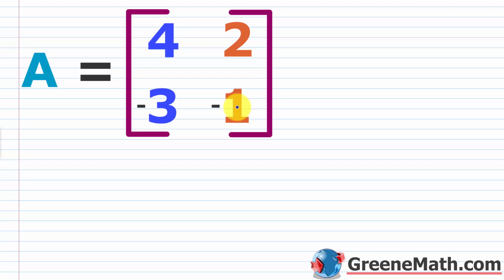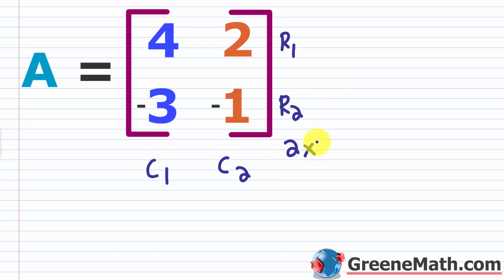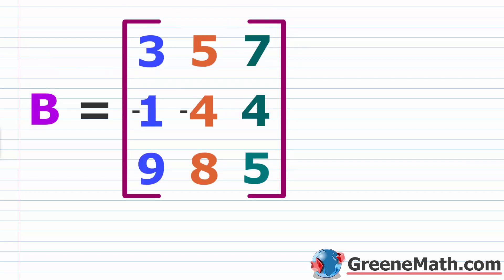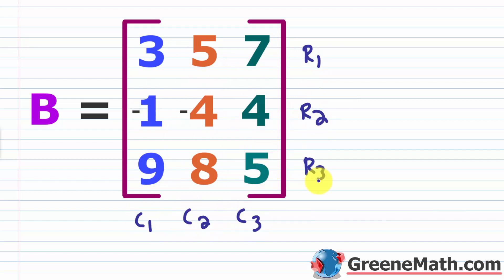Another thing to know: if a matrix has the same number of rows as it has columns, it's referred to as a square matrix. This matrix A has two rows and two columns, so it's a 2 by 2 — otherwise known as a square matrix. So whether it's a 3 by 3, a 4 by 4, or a 117 by 117, the same number of rows as columns means it's a square matrix. Matrix B here is another example — it has three rows and three columns, making it a 3 by 3 square matrix.